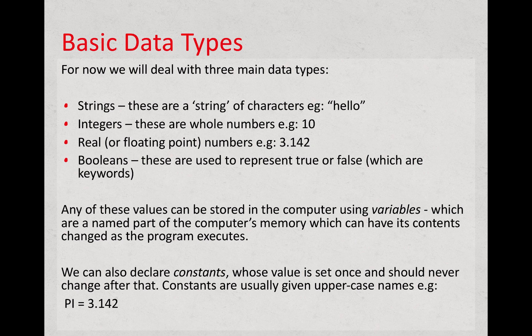Some of the main data types you'll deal with are strings. These are just characters put together to form a sequence. Then we have integers, which are whole numbers, and real or floating point numbers, which have a decimal point. And then we have a type called booleans, which represent true or false.